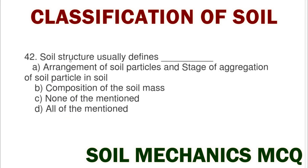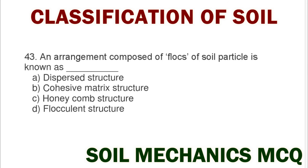Next question: the soil structure usually defines — option A arrangement of soil particles and the stage of aggregation of soil particles in soil, option B composition of the soil mass, option C none of mentioned, option D all of mentioned. The correct answer is option A arrangement of soil particles and stage of aggregation of soil particles in soil.